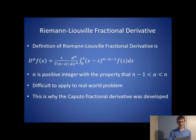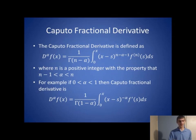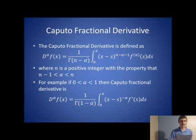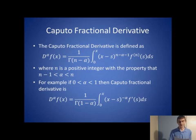Because the Riemann-Liouville fractional derivative is hard to apply to real-world problems, the Caputo fractional derivative was invented. The Caputo fractional derivative is defined as 1 over gamma(n minus alpha) times the integral from 0 to x of (x minus s) to the n minus alpha minus 1 times f^(n)(s) ds, with n minus 1 less than alpha less than n. For example, if 0 is less than alpha less than 1, then n equals 1 and f^(n)(s) becomes f prime of s.